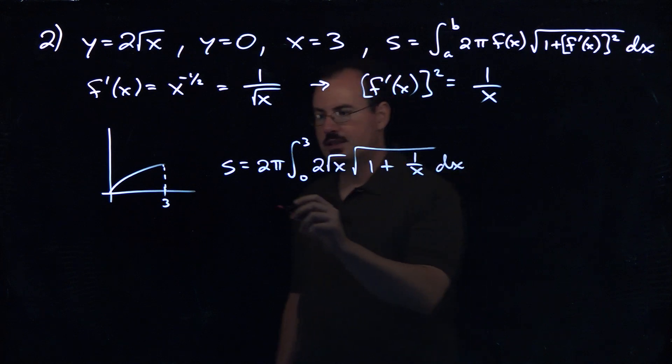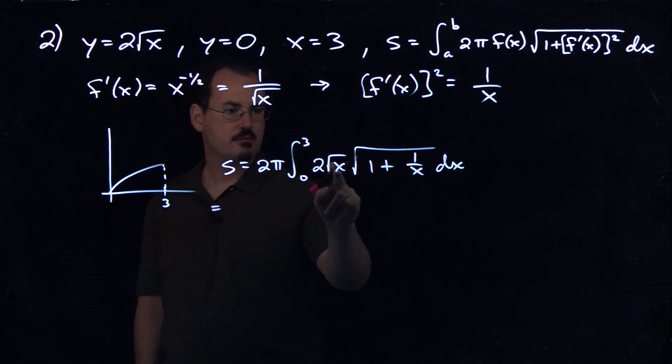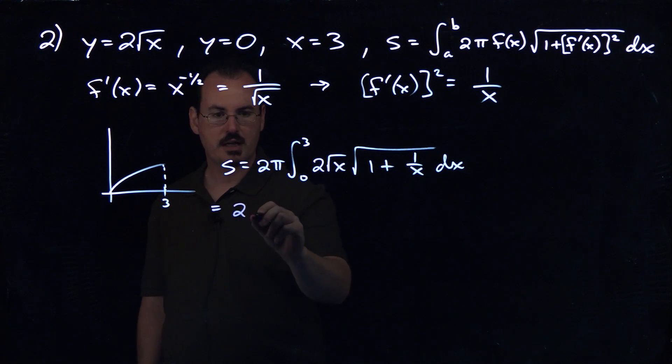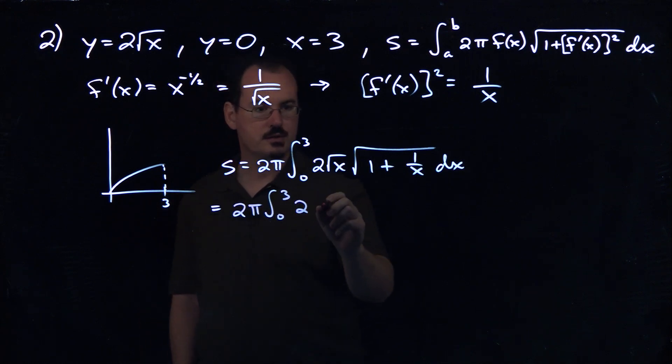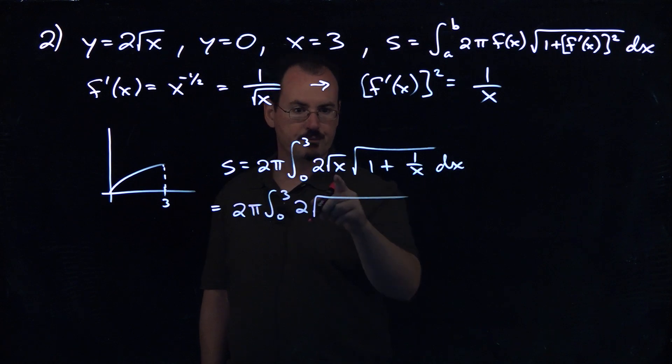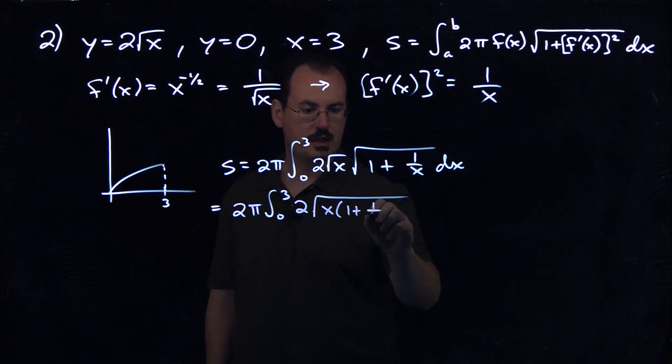So the way to do this particular integral, we're going to have to, we have the square root of something times the square root of something else, so we can just combine them under a single radical. So we'll do that. So if I put that x under the radical, I'm going to get this, x times 1 plus 1 over x.